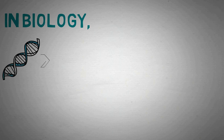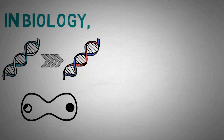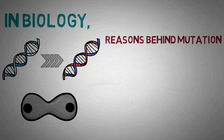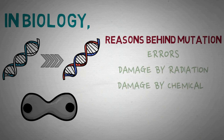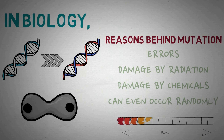In biology, a mutation is anything that leads to a change in the genetic material — the same genetic material which is responsible for each and every aspect of a cell's existence. Genetic material controls how a cell grows, works, acts, reacts, and eventually dies. These mutations can happen for several reasons: errors, damage by radiation or by chemicals, and in fact, mutations even occur randomly. Mutations may be bad for the organism, may be neutral, or may even be beneficial.